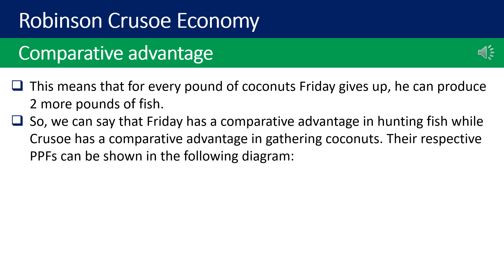This means that for every pound of coconuts Friday gives up, he can produce 2 more pounds of fish. So Friday has a comparative advantage in hunting fish, while Crusoe has a comparative advantage in gathering coconuts. Their respective PPFs can be shown in the following diagram.